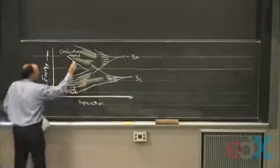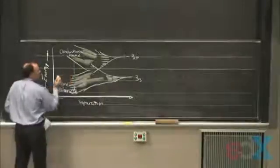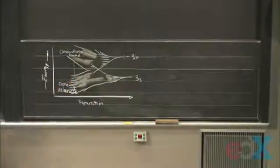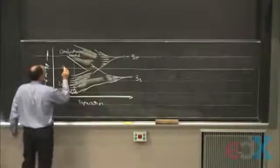and there's a gap that appears between the bonding and antibonding, just like you had in simple molecules. We call that the gap, the band gap.